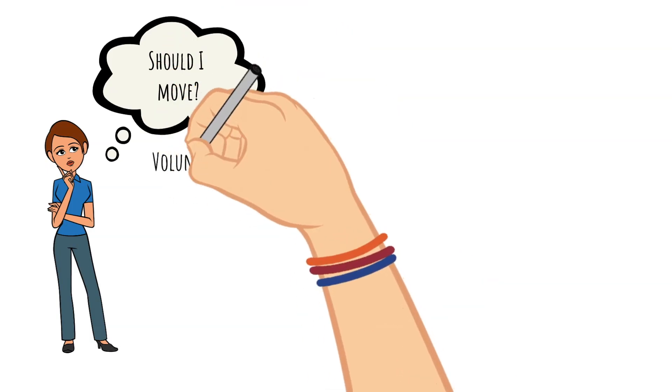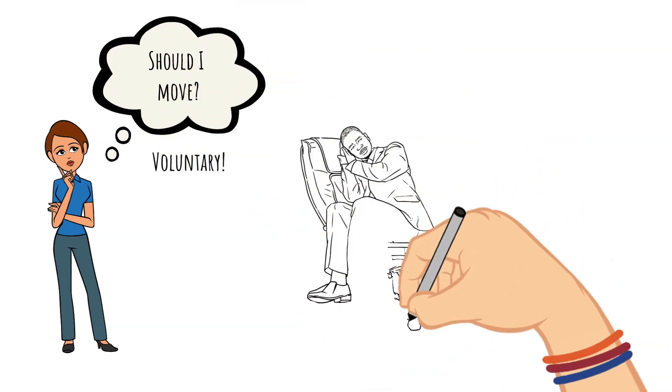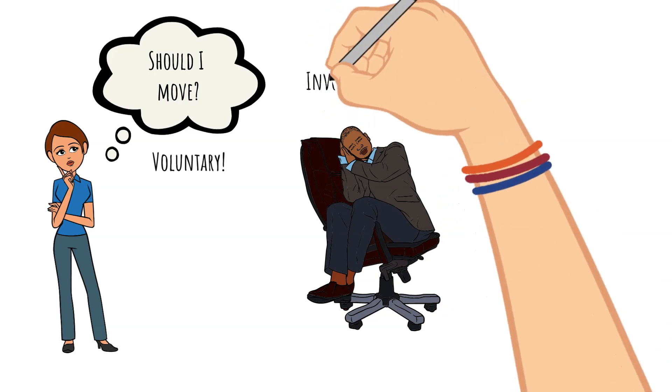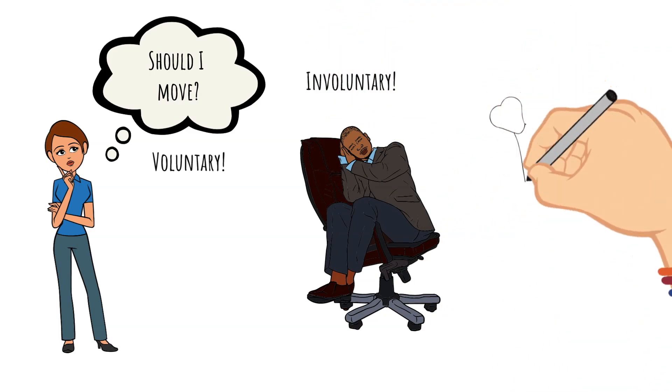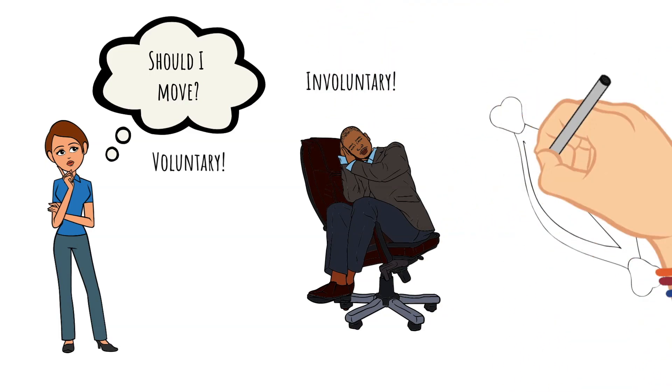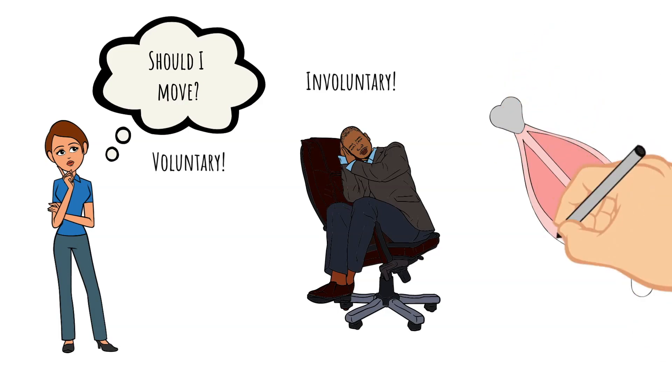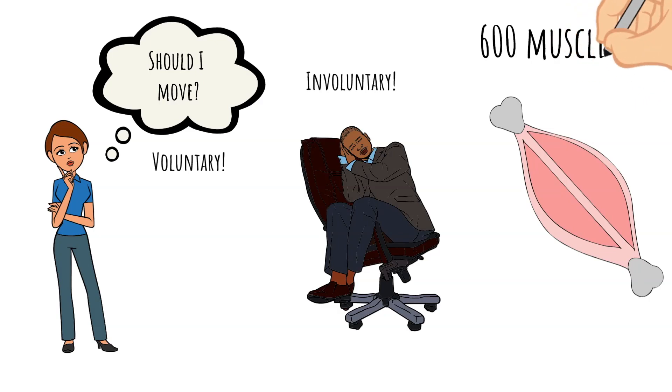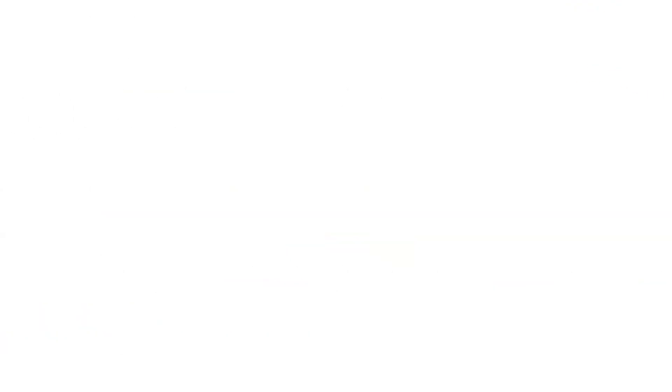Did you know there are actually 600 muscles in your body helping to make life as you know it possible? So let's jump into the three types of muscles.